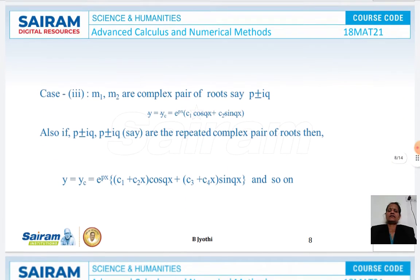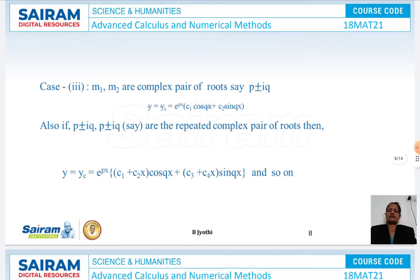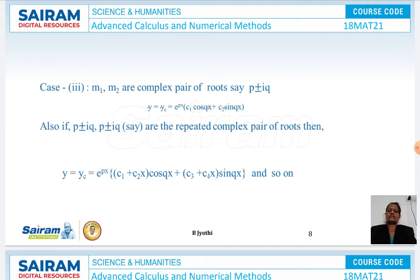Case 3: if m₁ and m₂ are a complex pair of roots p ± iq, then yc = e^(px)(c₁cos(qx) + c₂sin(qx)). Also, if p ± iq are repeated complex roots, then we have the solution in this form.